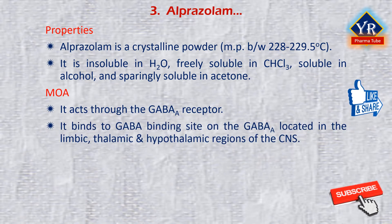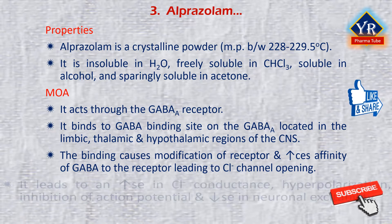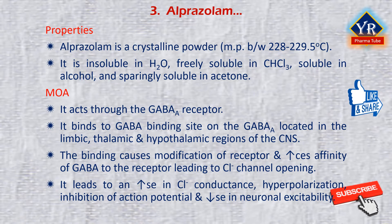Alprazolam binds to a specific site distinct from the GABA binding site on the benzodiazepine–GABA-A–chloride ion receptor complex located in the limbic, thalamic, and hypothalamic regions of the central nervous system. This binding causes an allosteric modification of the receptor, enhancing the affinity of GABA to the receptor, leading to an increase in the frequency of chloride channel opening events, increased chloride ion conductance, neuronal hyperpolarization, inhibition of the action potential, and a decrease in neuronal excitability.